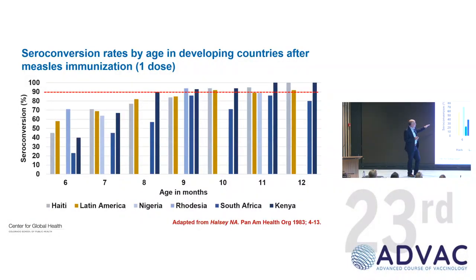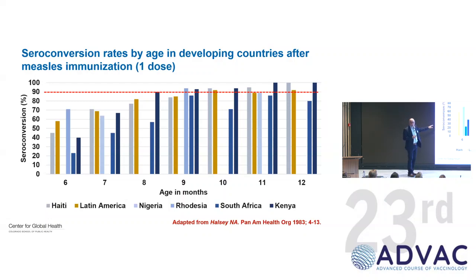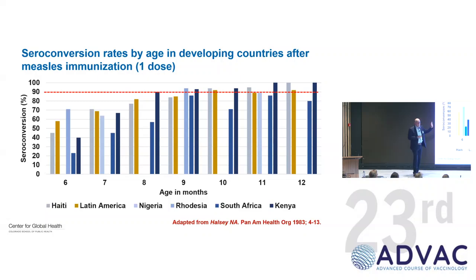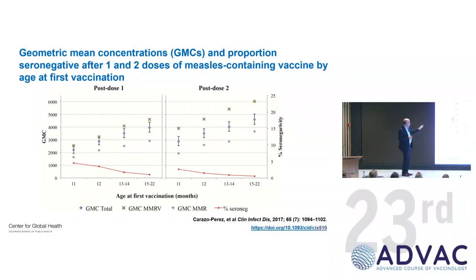One example of how they reviewed the evidence is on measles. These are the seroconversion rates to measles vaccine depending on the age at vaccination. At six months, it's about 50 to 60% seroconversion. When you get past 12 months of age, it's almost 90% or above. But in many countries, measles was happening very early in life and infants were dying. So the decision was made that nine months was the cutoff — that balance of protection plus making sure we got enough immunogenicity. But we know that schedule does leave some children susceptible.